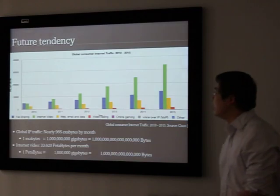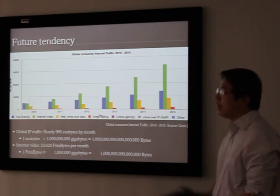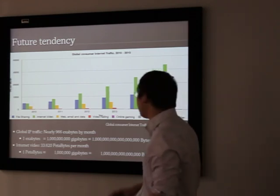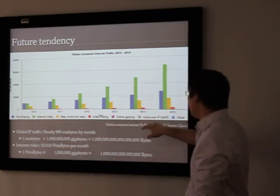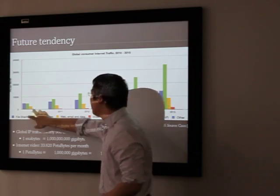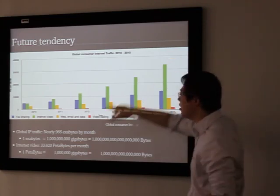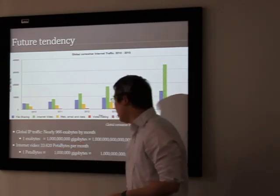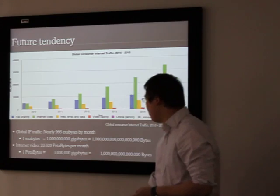Introduction. Internet is a place where data grows very fast. This is the forecast done by Cisco at the beginning of this month, June 2011. The data can be gathered very easily from different types: file sharing, internet video, web data, video calling, online gaming, voice over IP, and others. From this graph, we can see that the tendency of internet video is very high. It's going to grow very much from 2010 to 2015. That means in 2015, it's going to be like 33,620 petabytes per month. This is 1 petabyte roughly like 1 million gigabytes, which is huge.